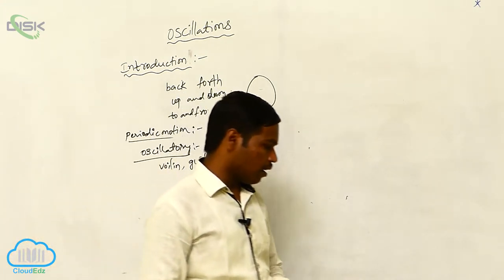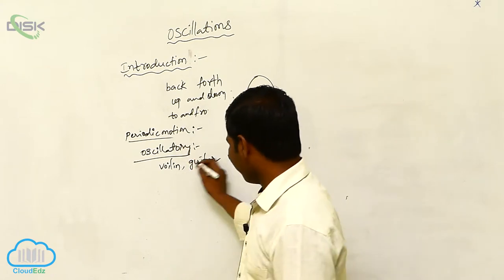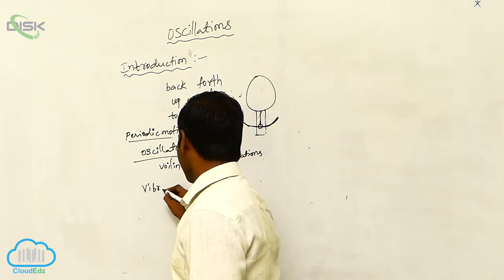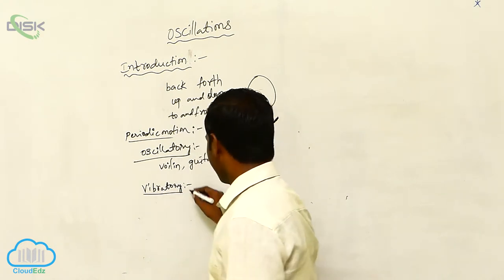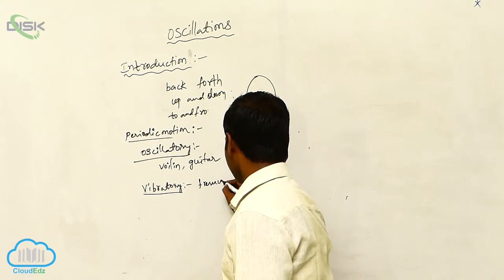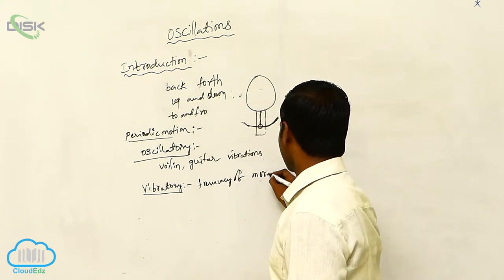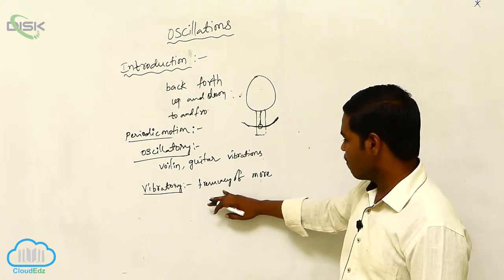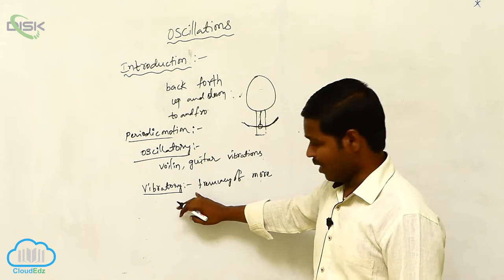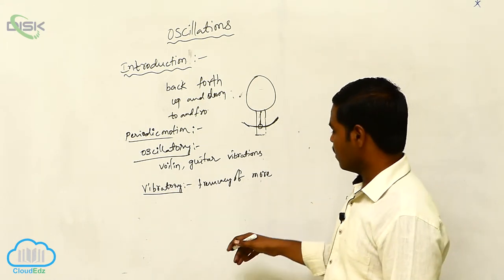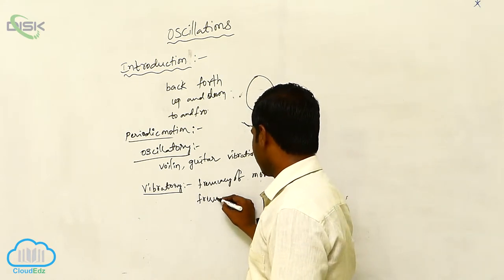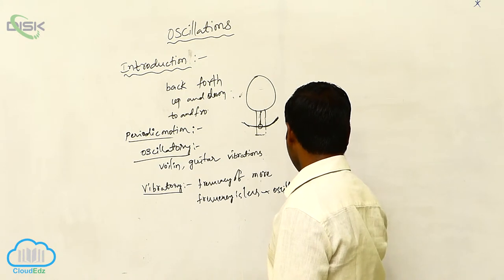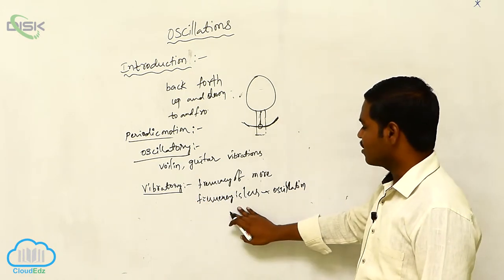We have different examples of oscillatory and vibratory motion. The key difference is frequency: if the frequency of oscillation is more, it is called vibratory motion. If the frequency is less, it is called oscillatory motion. This is the main difference between vibratory motion and oscillatory motion.